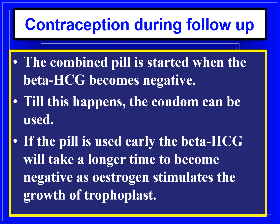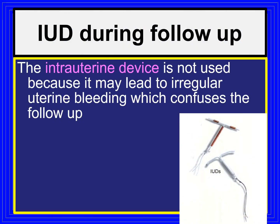Regarding contraception during follow-up: the combined pill can be started once HCG levels become negative. Until then, the woman should use condoms. If pills are used earlier, beta-HCG will take longer to become negative because estrogen stimulates trophoblast growth. Intrauterine devices are not used during follow-up as they may cause irregular uterine bleeding, which could be confused with residual vesicular mole.